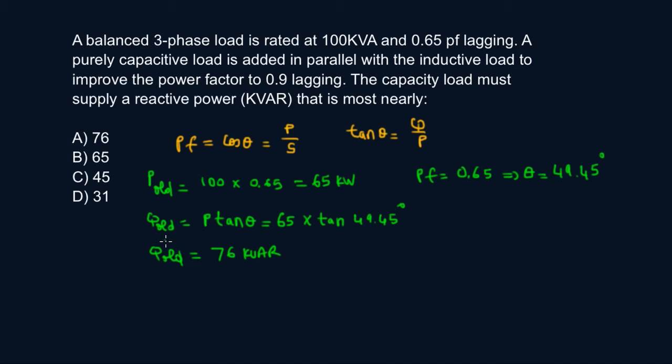So this is my old, given the old system of 100 kVA and 0.65, I have a reactive power of 76 kVars. So now I'm adding a capacitor. It could be a capacitor bank or whatever, but I'm adding a capacitor. Now that I'm adding a capacitor, how much is the new reactive power?